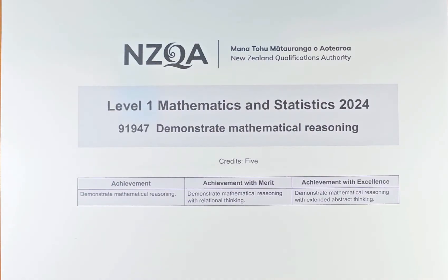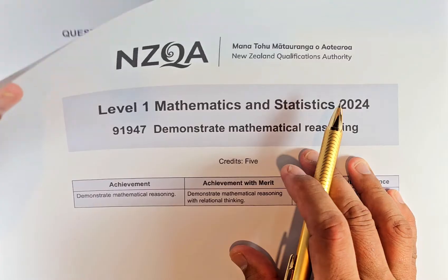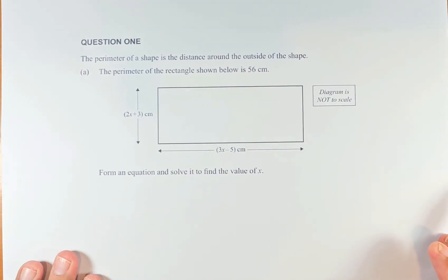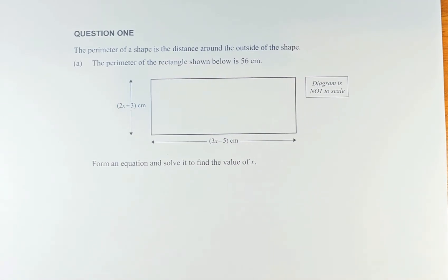This is the first time the paper was introduced in 2024 and this paper is worth 5 credits. So without further ado, let's try to solve question 1A which is an achieved question.